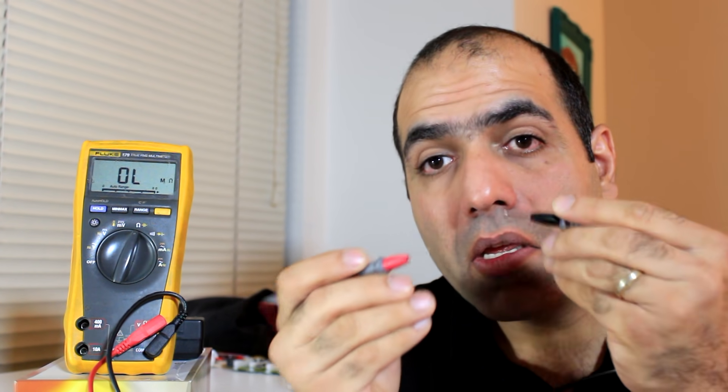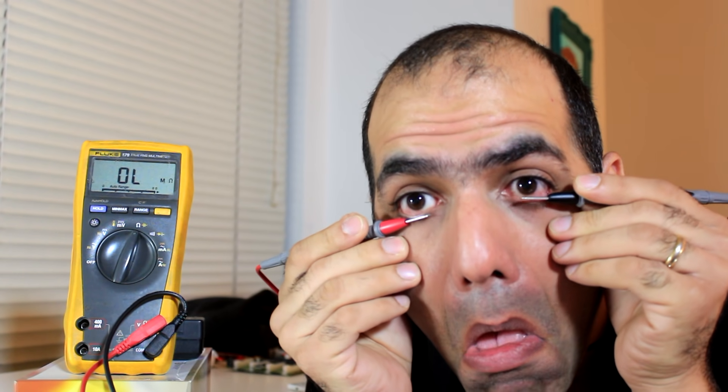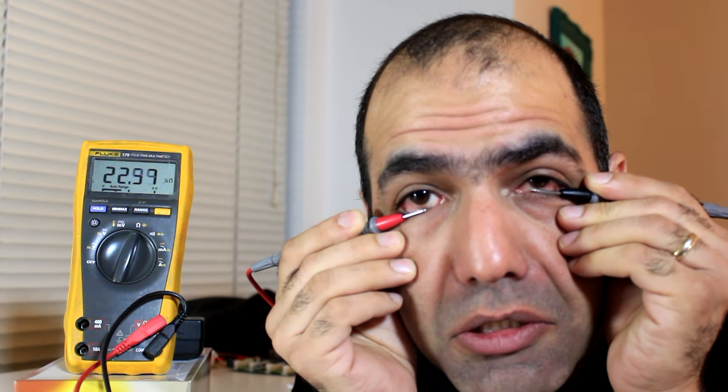Now, if I probe my eyes carefully, you see that the resistance of the eyes is somewhere between 20k to 50 kilo ohms, which is much smaller than the skin.